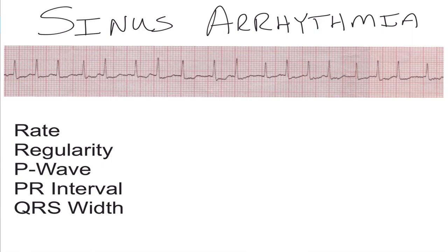Next, let's talk about sinus arrhythmias. A sinus arrhythmia is the same thing as a normal sinus rhythm, however the regularity of the strip is going to vary depending upon the patient's respiratory status. You'll notice that with these types of arrhythmias the rhythm will become slower during exhalation and faster with inhalation. The reason this happens is because with inhalation you're going to see an increase in venous return, which therefore lowers intrathoracic pressure.